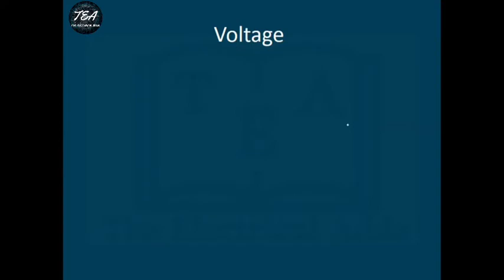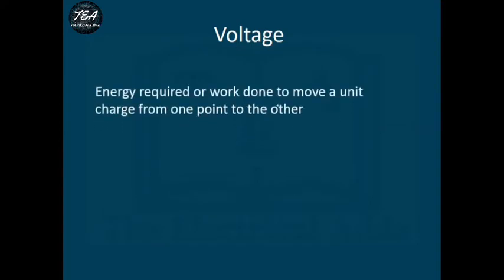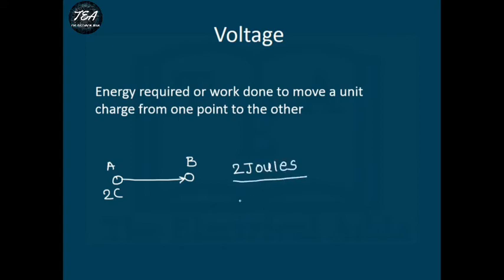Voltage is defined as the energy required (or work done) to move a unit charge from one point to another. For example, if we have 2 coulombs of charge at point A and moving it to point B requires 2 joules of energy, then the voltage or potential difference between A and B is 2 joules ÷ 2 coulombs = 1 volt. The unit of voltage is the volt, denoted by the symbol V.